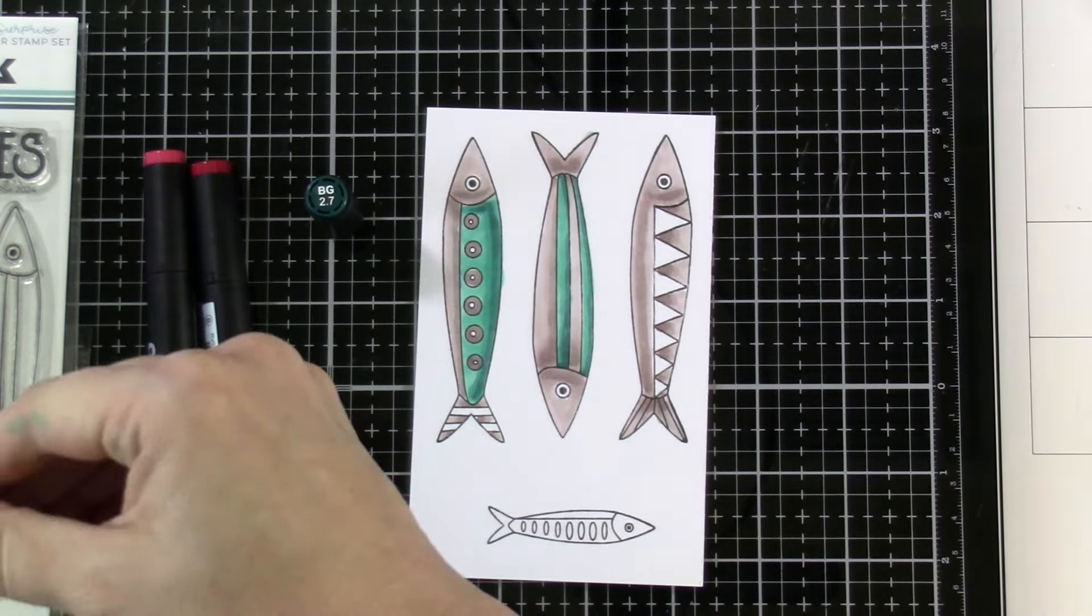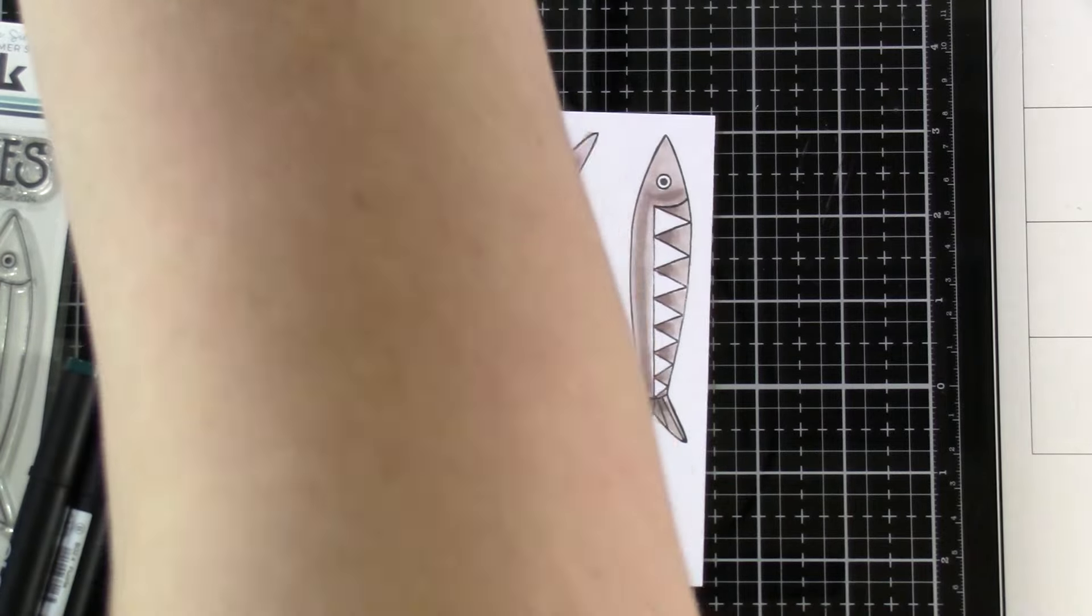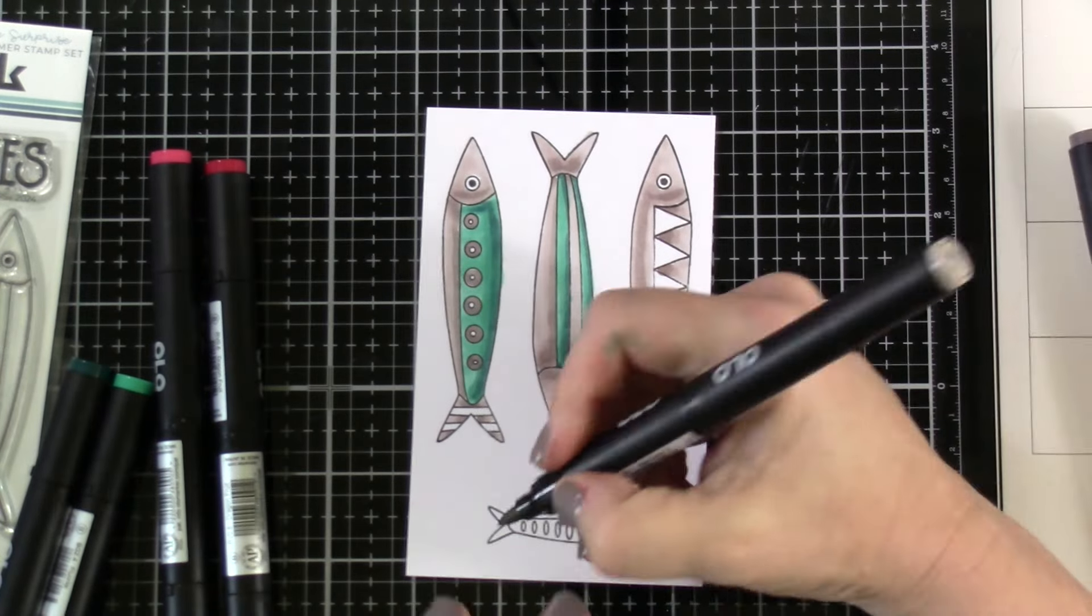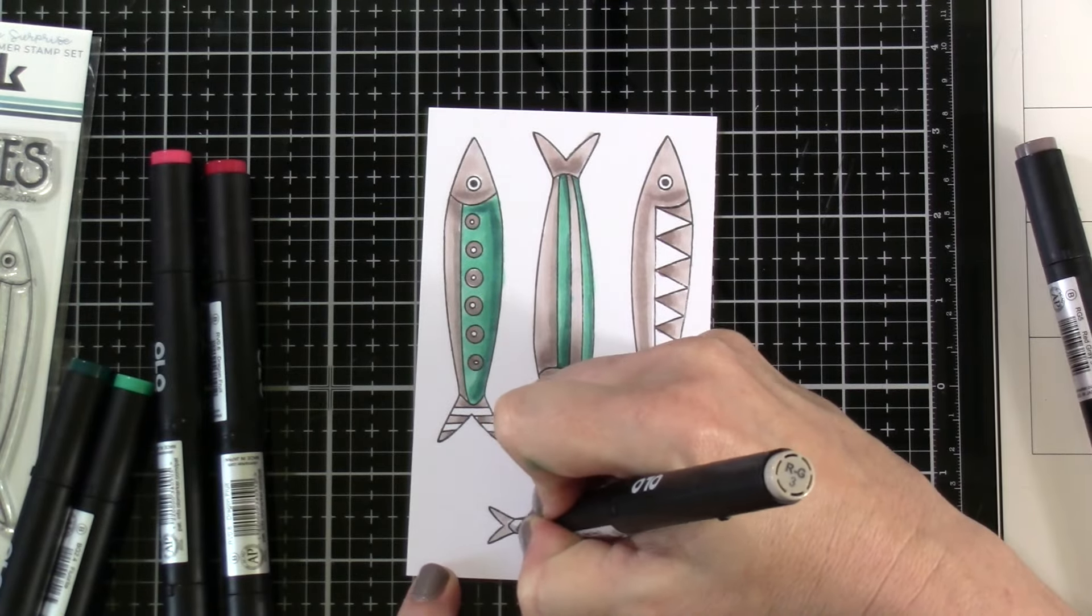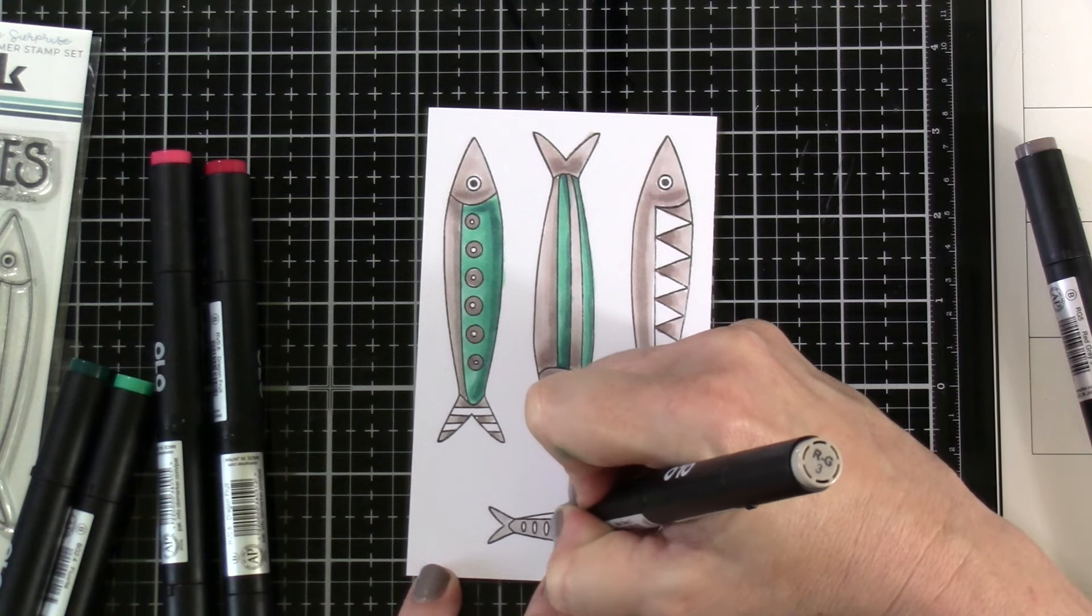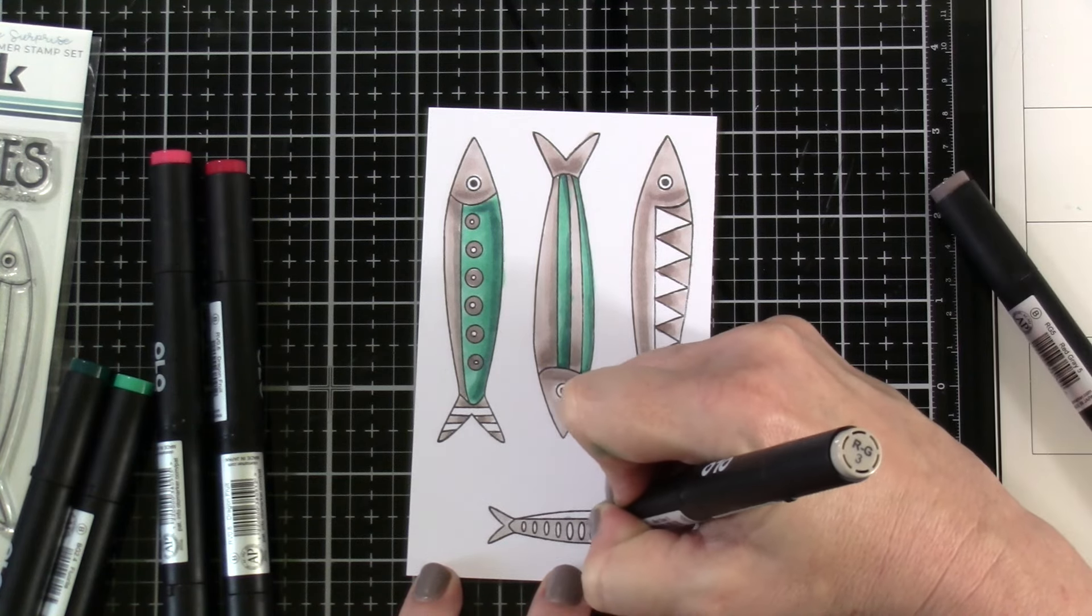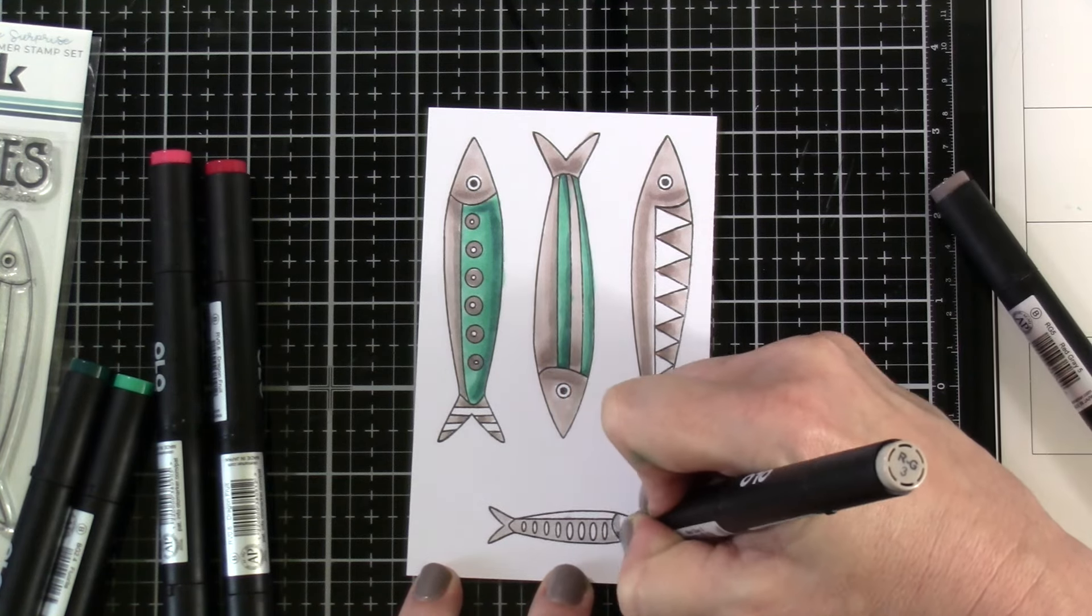I suppose I'm putting it more on the bottom of the fish if that makes any sense and you could make the bottom either side really because the eye is right in the middle and so I feel like you could make the bottom either end.